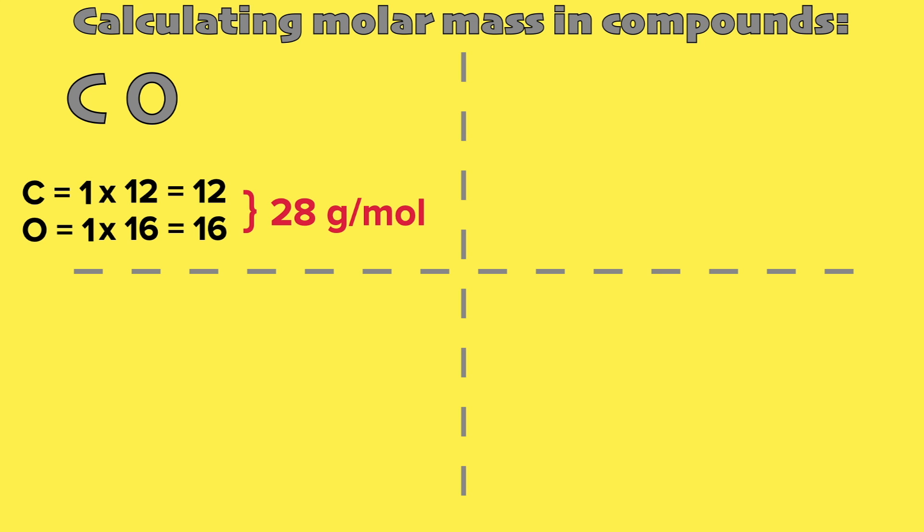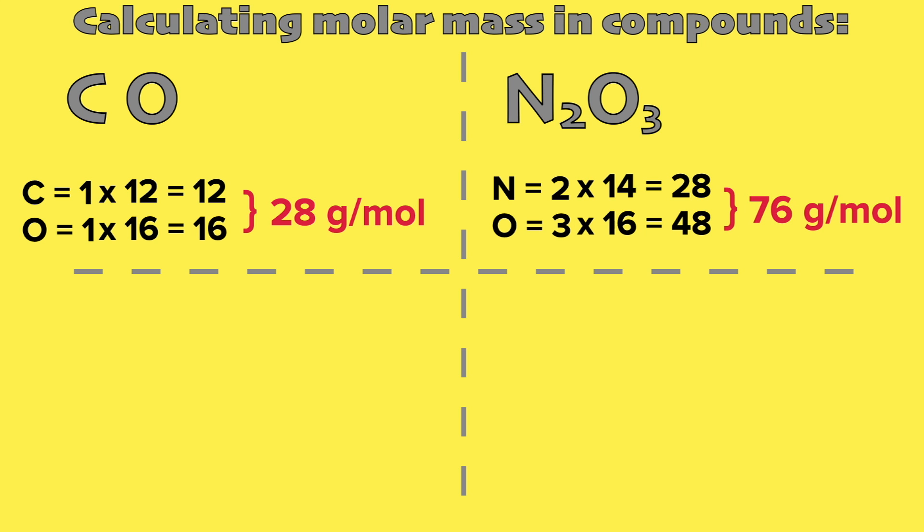In the next example, we can see that we have two nitrogen and three oxygen atoms. We then multiply those values to the molar masses of each element. Add the final values together to get 76 grams per mole as the molar mass of the whole compound.